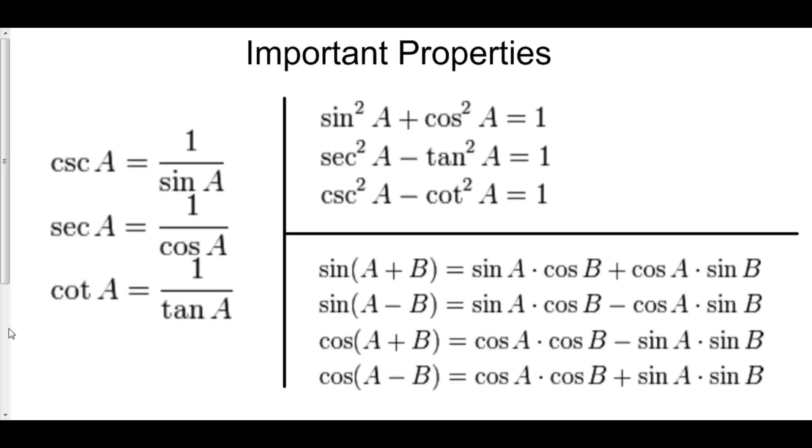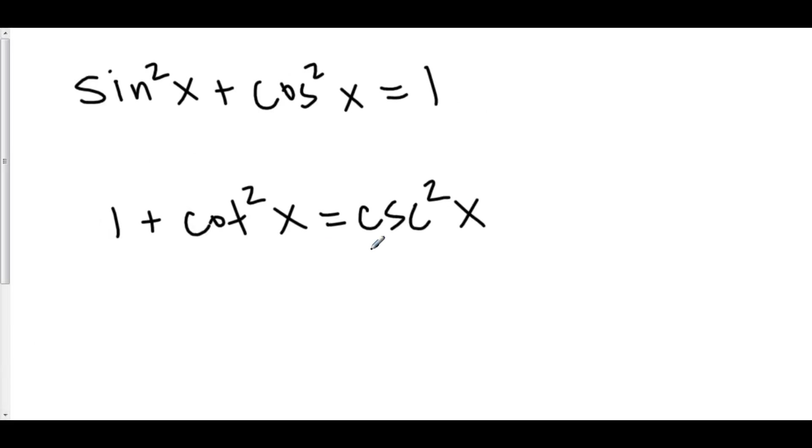Let's take a look back. Oh look, cosecant squared minus cotangent squared equals 1. Boom, we just got that. Or...